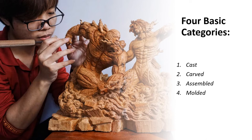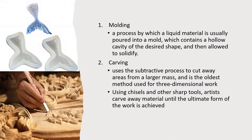Sculptures fall into four basic categories. They may be either cast, carved, assembled, or molded. Molding is a process by which a liquid material is usually poured into a mold, which contains a hollow cavity of the desired shape and then allowed to solidify.